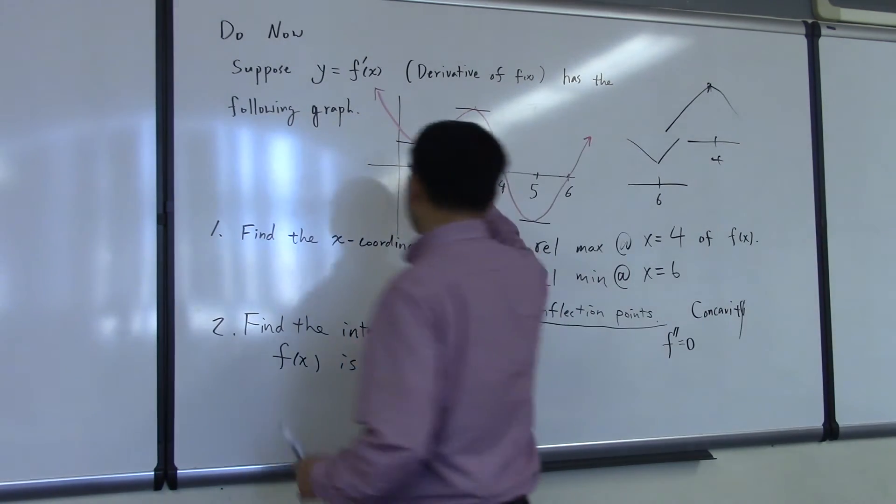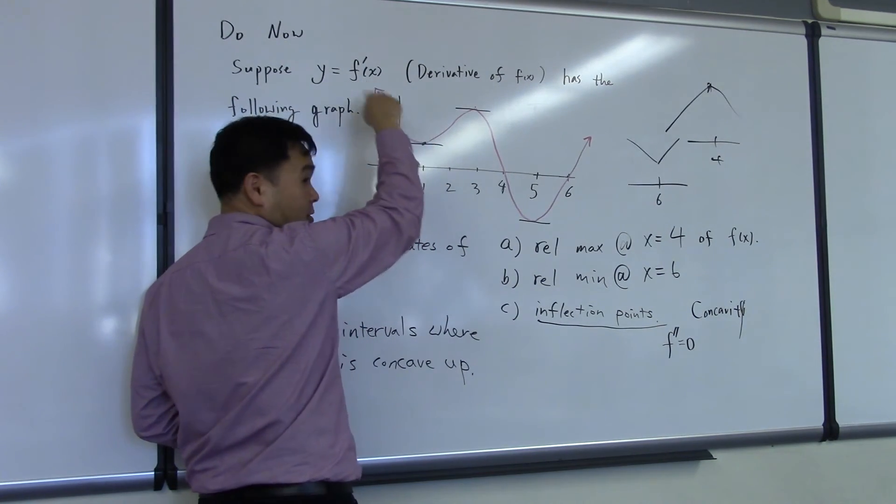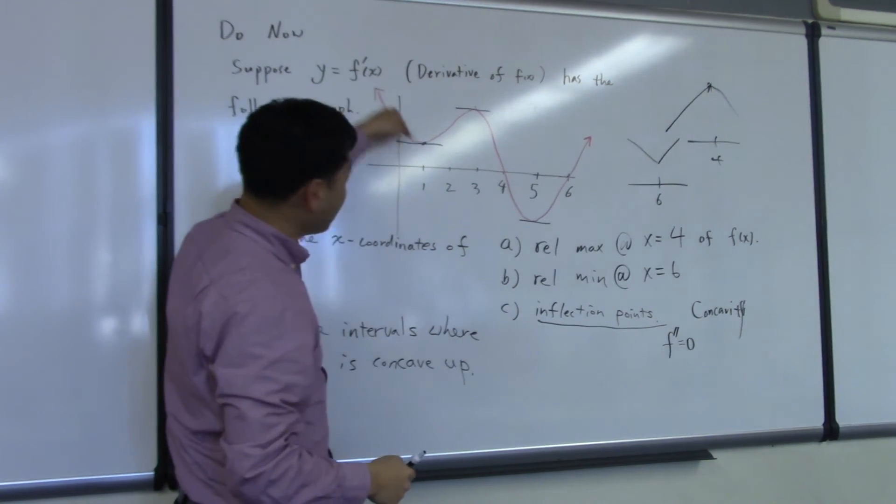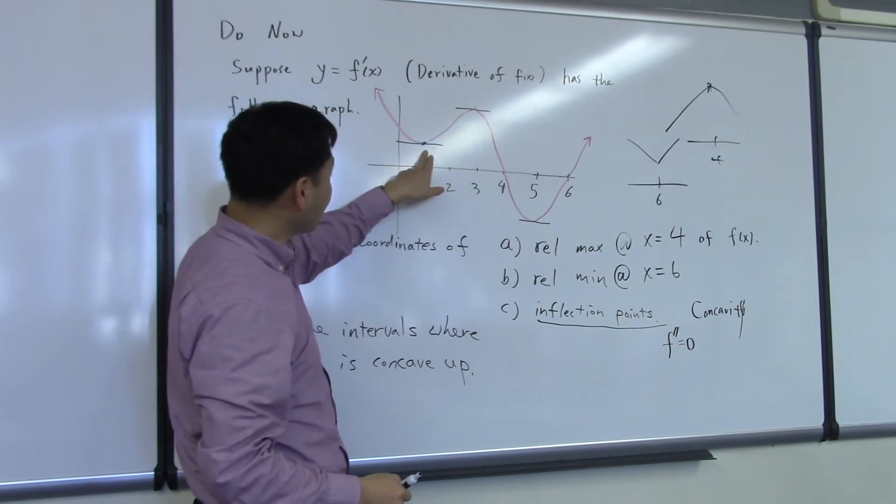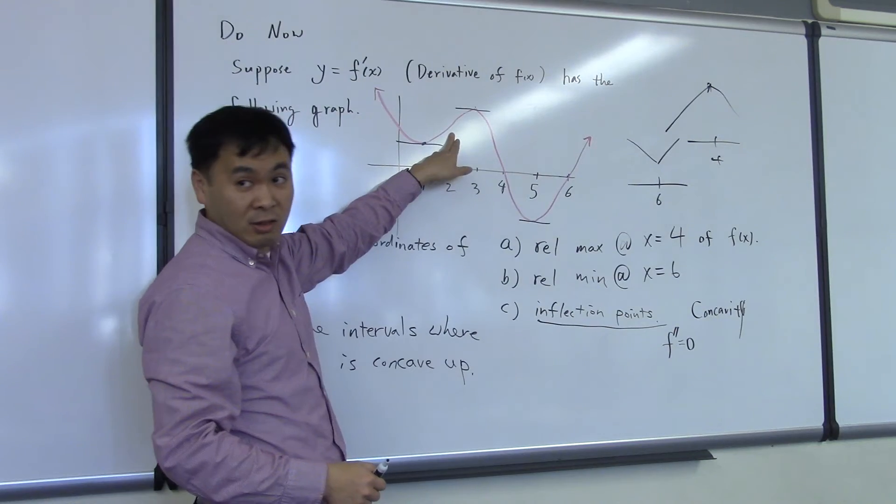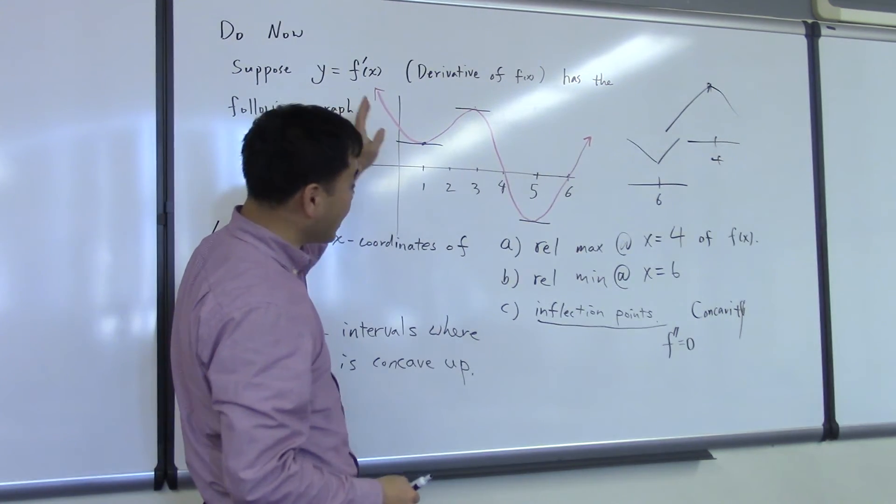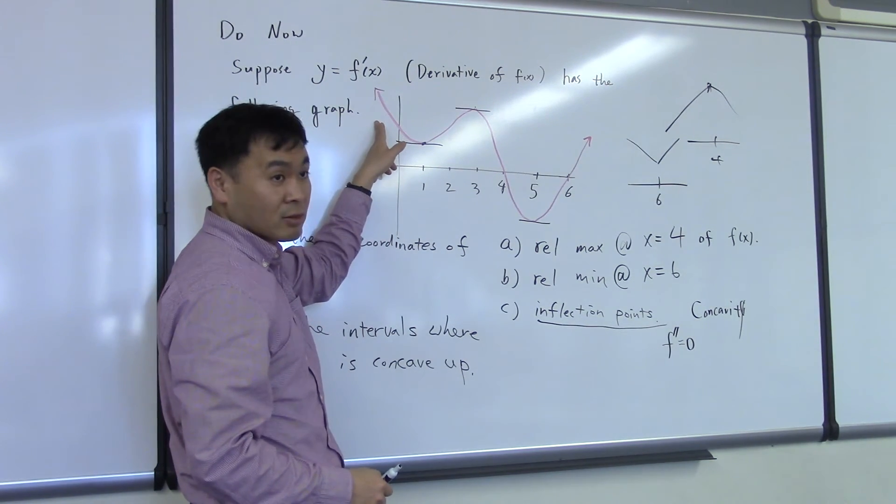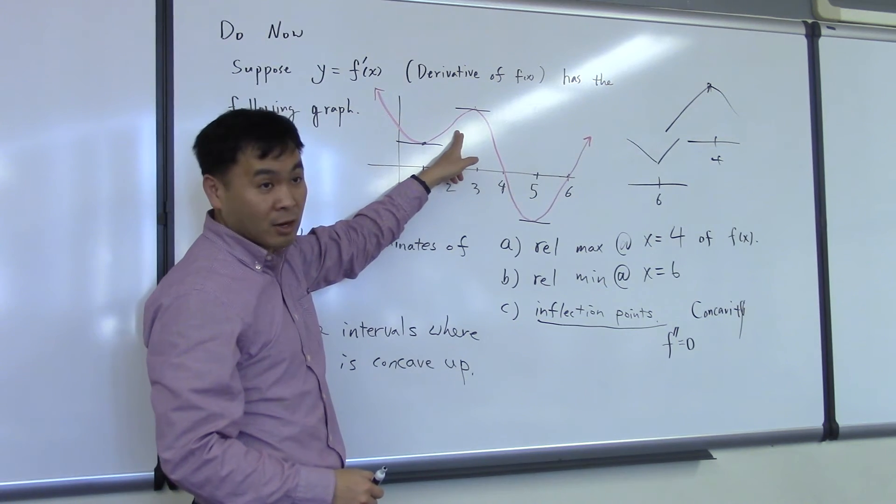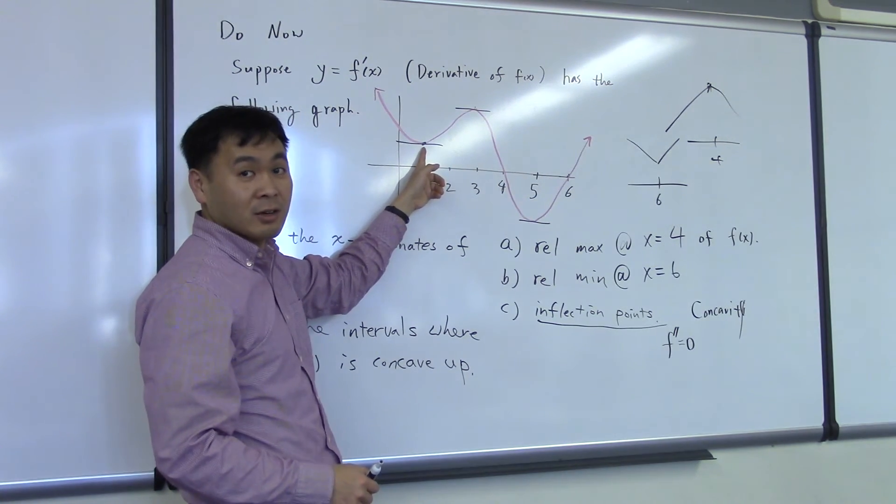What's the value of f double prime before 1? f prime is increasing, so its derivative is negative. After 1, f prime is increasing, so the derivative is positive. So f double prime went from negative to positive. What does it say about f of x? It went from concave down to concave up. So was there a change in concavity? Yes.